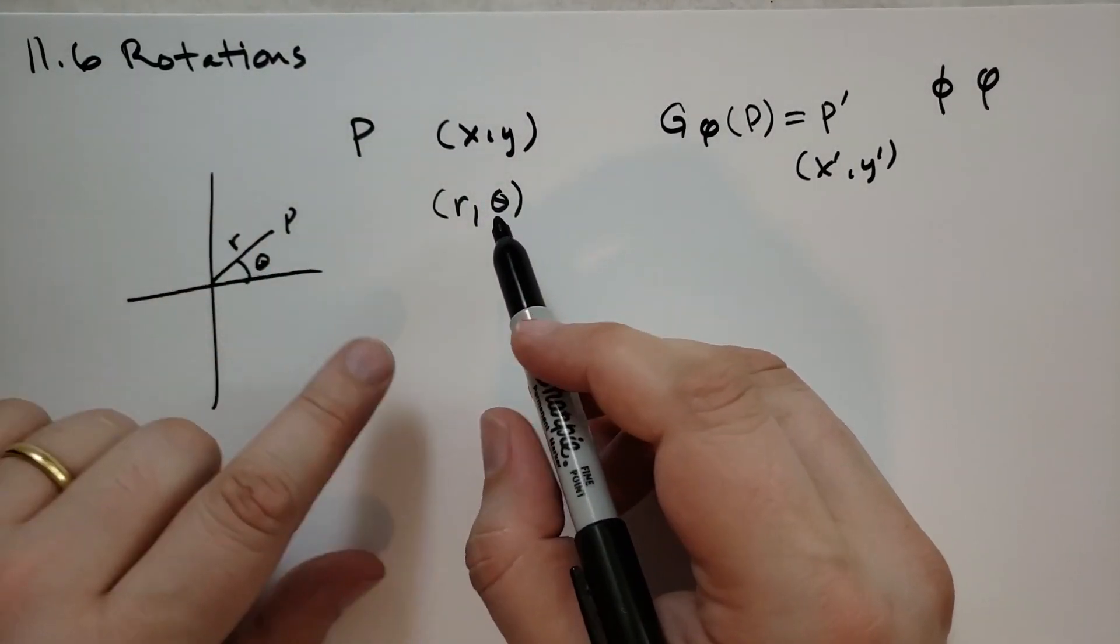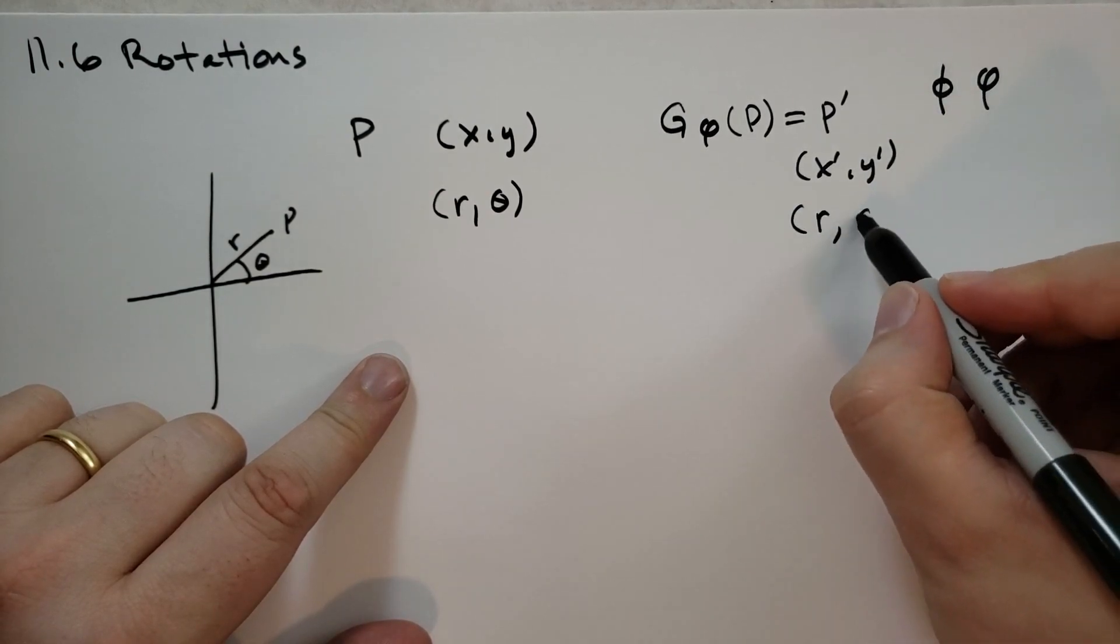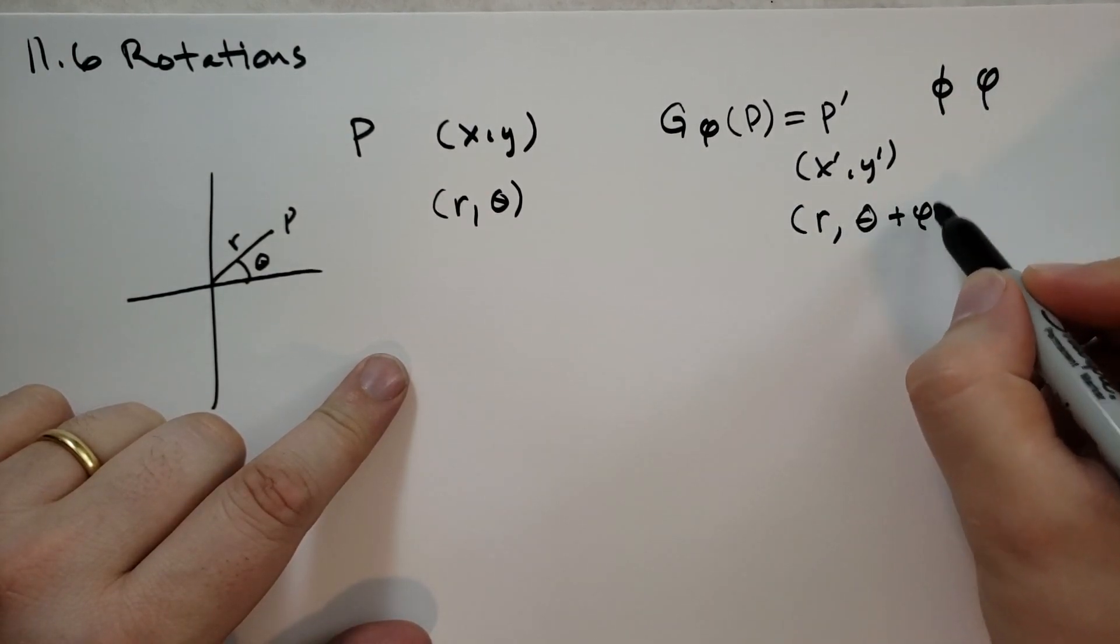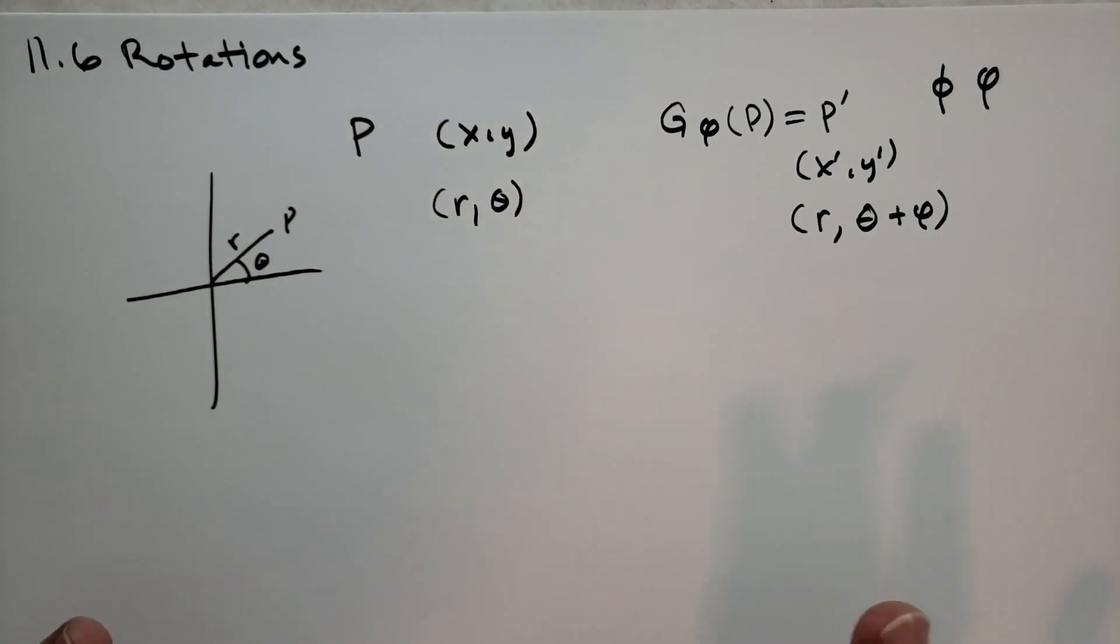Now, if we're going to rotate around the origin, then the new point is going to have the same distance from the origin, and then the angle is going to be theta plus phi. That's it. So in polar coordinates, it's very trivial to rotate around the origin.